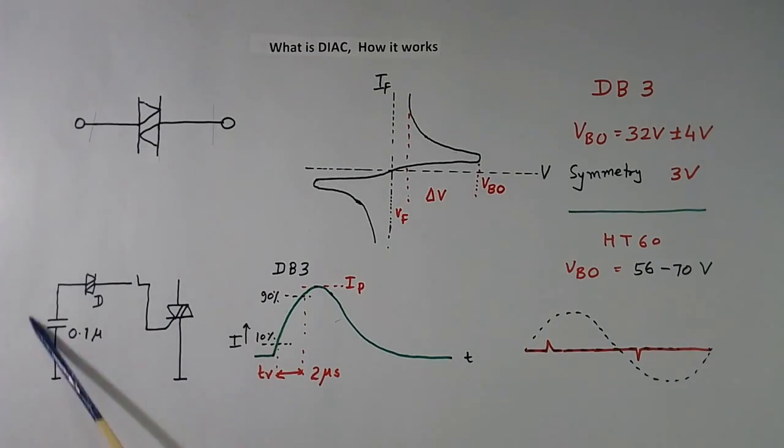This circuit is made here to study dynamic behavior of the DIAC. This is TRIAC. This capacitor is pre-charged. When we close the switch, voltage across the DIAC becomes more than VBO. So it triggers.